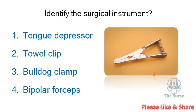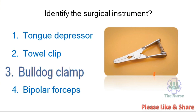Next question. Identify the surgical instrument shown in the picture. Options: Tongue depressor, Towel clip, Bulldog clamp, or Bipolar forceps. The correct answer is Bulldog clamp, used to obstruct blood vessels during vascular surgeries — it is used to clamp arteries or veins during vascular surgery.